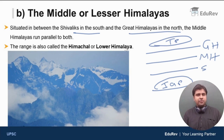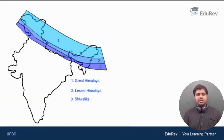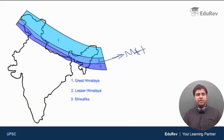Middle Himalayas are also called Himachal or the lower Himalaya. This is the region marked 2 on the map — the region where the middle Himalayas are situated. You should have a clear picture of where the middle Himalayas are situated, as that is very important.